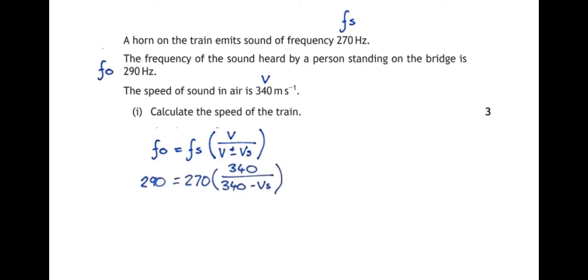So I can insert my numbers into the formula. 290 equals 270 times 340 divided by 340 minus VS. I have selected the minus rather than the plus in the formula because the train is getting closer to us. The train is approaching us. So the distance between us and the train is decreasing. It's subtracting distance. Therefore, we use the subtraction.